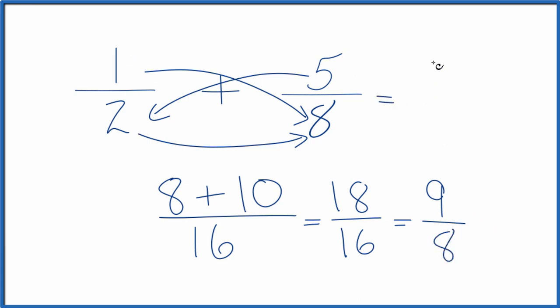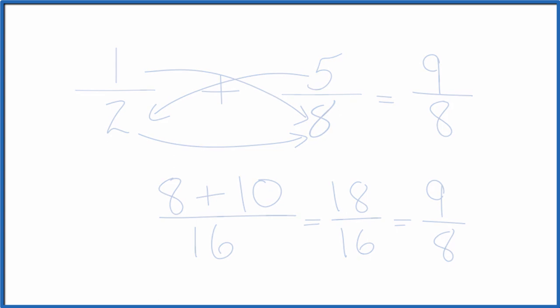One-half plus five-eighths equals nine-eighths. Note this is an improper fraction. You could change it to a mixed number, and that would be one and one-eighths. This is Dr. B. Thanks for watchin'.